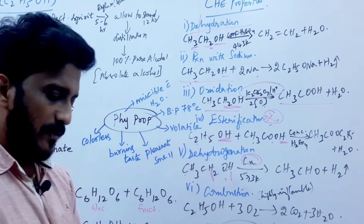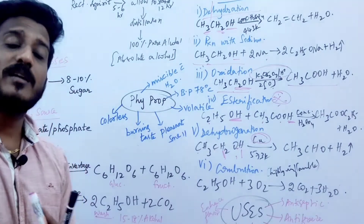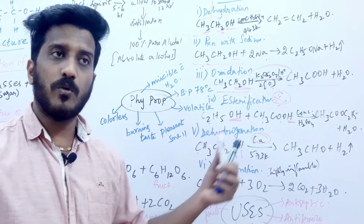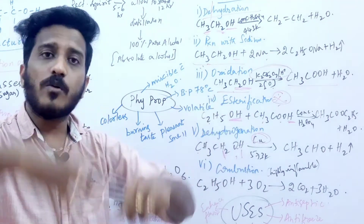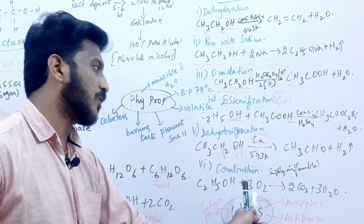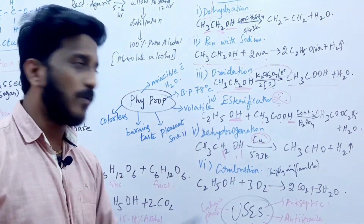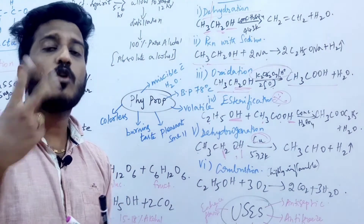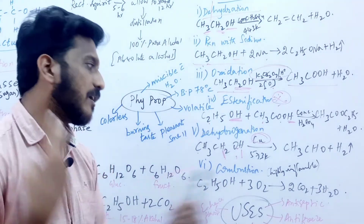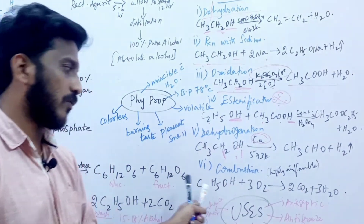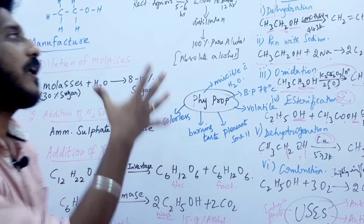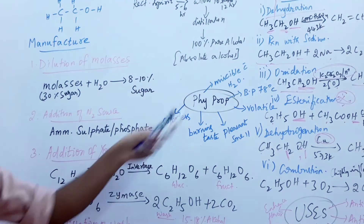Next is combustion. When ethanol burns in oxygen, it releases 2 carbon dioxide molecules and 3 water molecules. These are the chemical properties of ethanol.